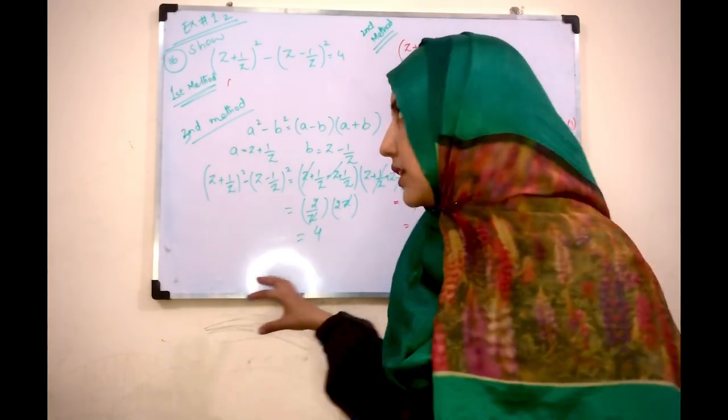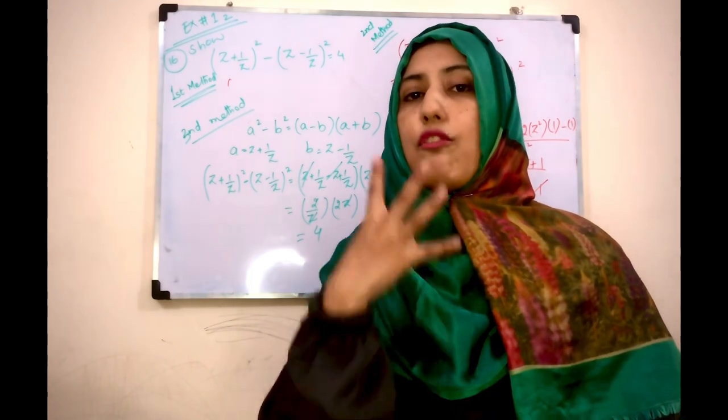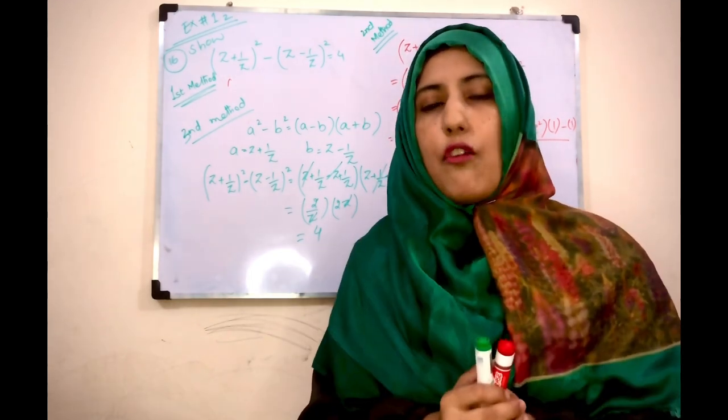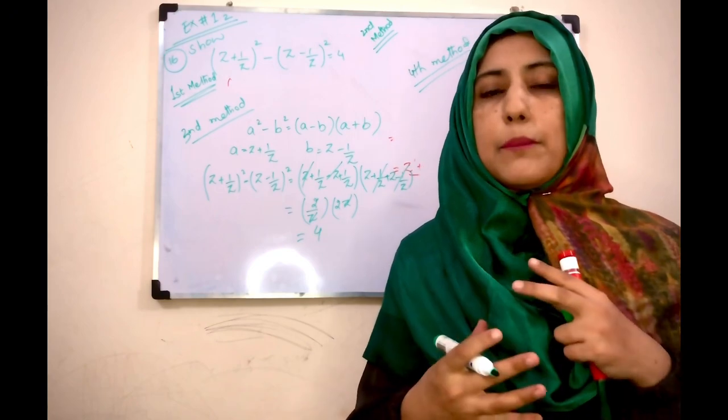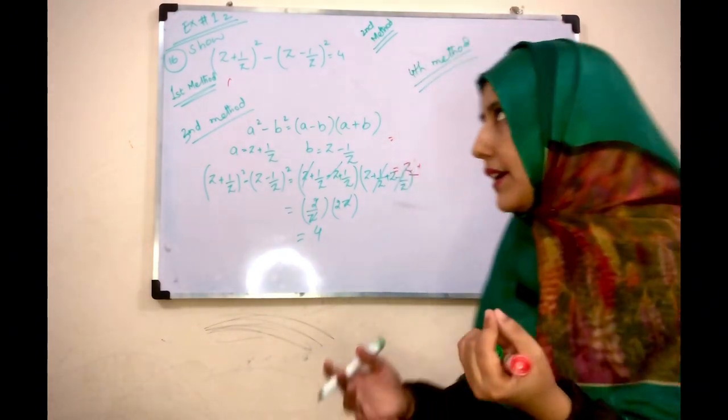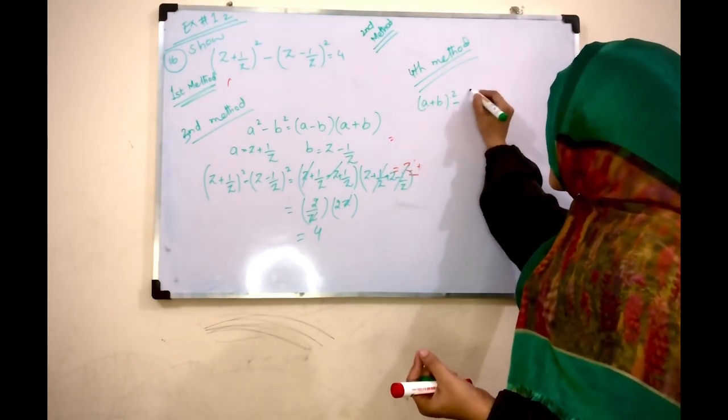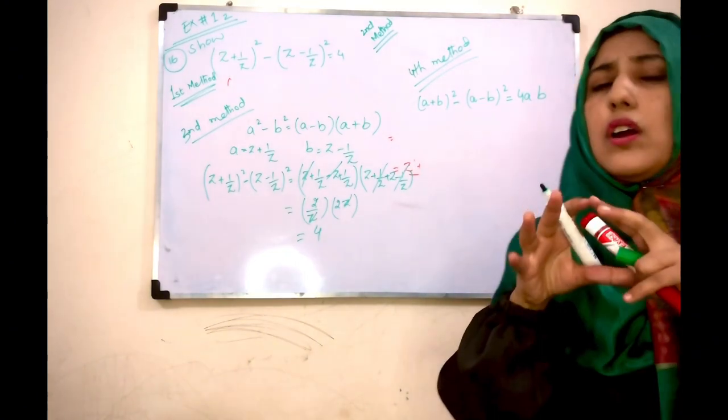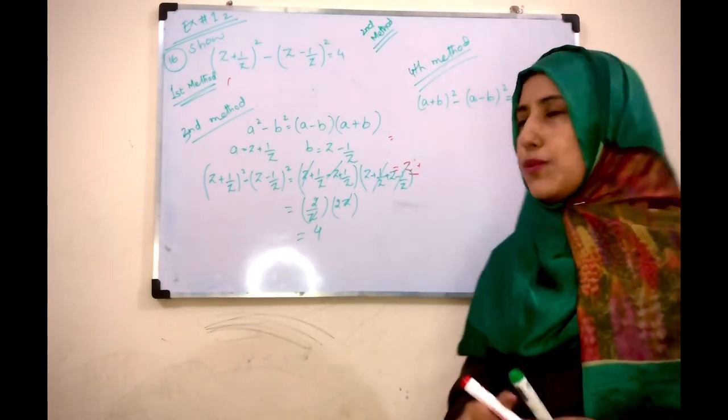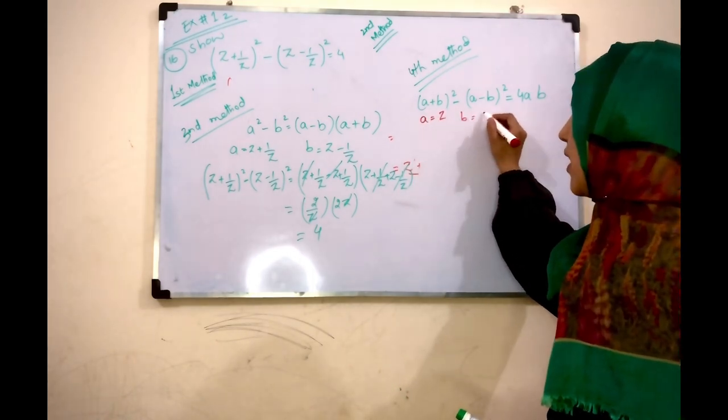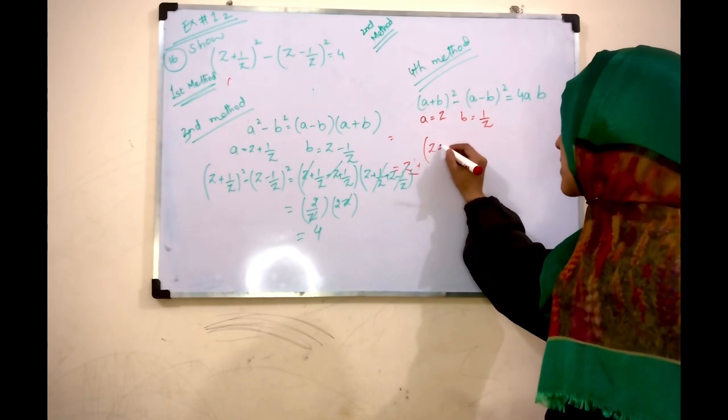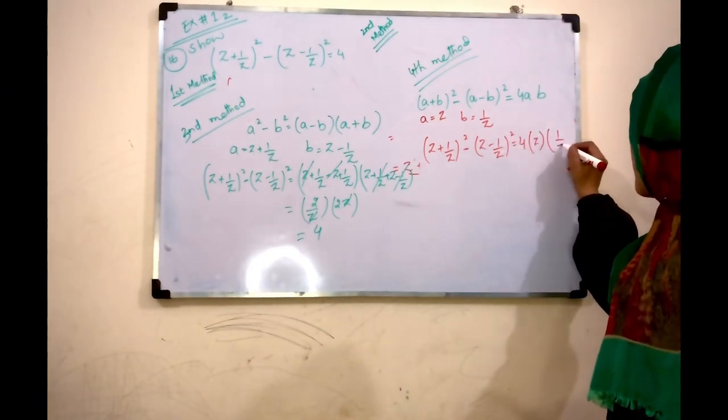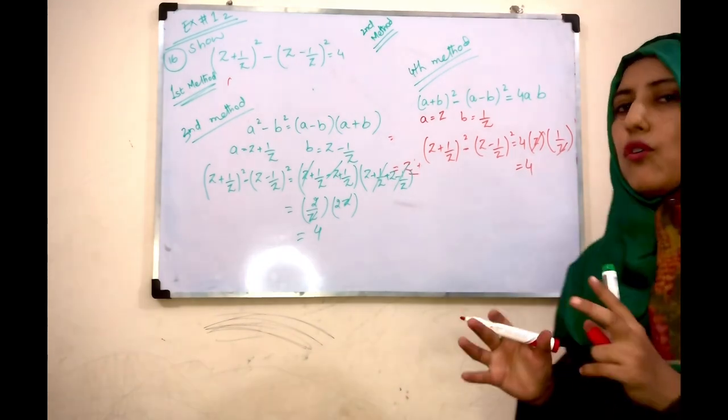Guys, this is another way to solve this question. The fourth one, you can say it's a trick or a method. In the fourth method we apply an identity, it's a derived identity: (a + b)² minus (a - b)² equals 4ab. Here we put the same values: a equals z and b equals 1/z. So (z + 1/z)² minus (z - 1/z)² equals 4 times z times 1/z, which equals 4.